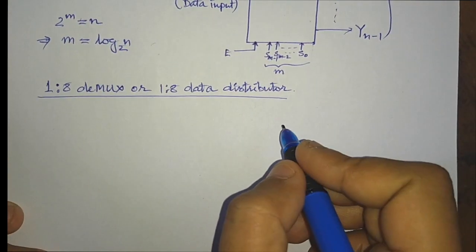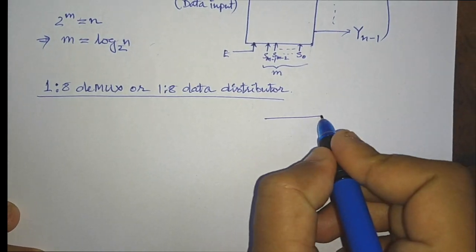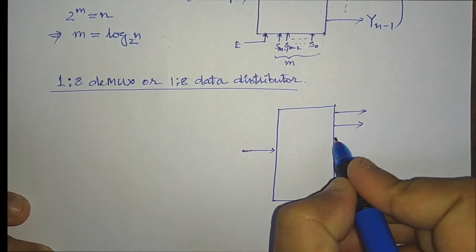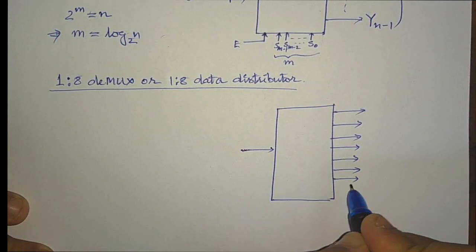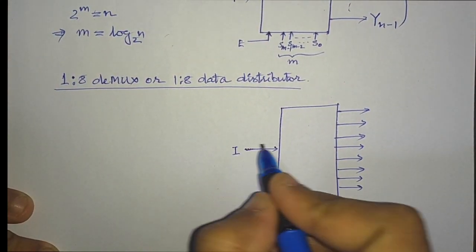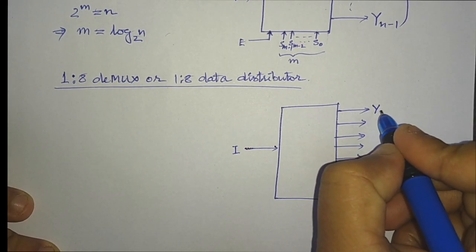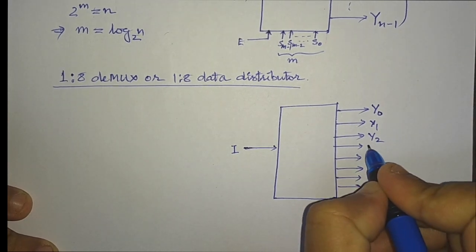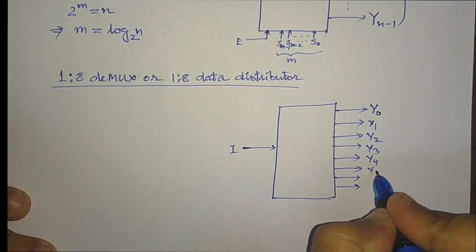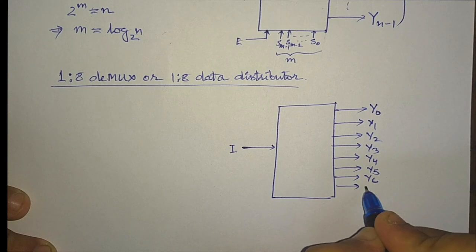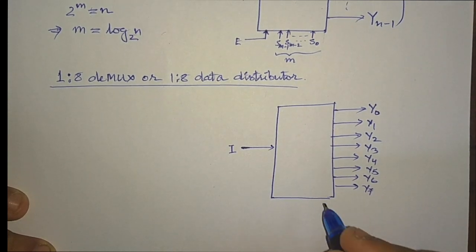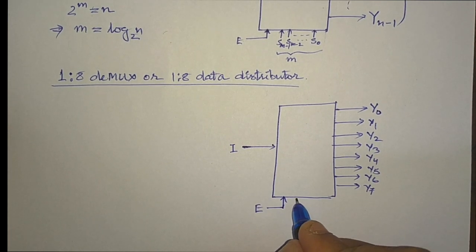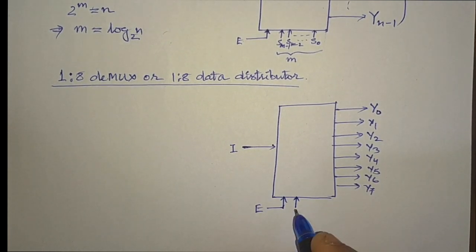In a 1-to-8 demultiplexer we will have 1 single input line and 8 output lines. The input line is denoted by i, and the output lines are Y0, Y1, Y2, Y3, Y4, Y5, Y6, and Y7. We will also have an enable input denoted by capital E.